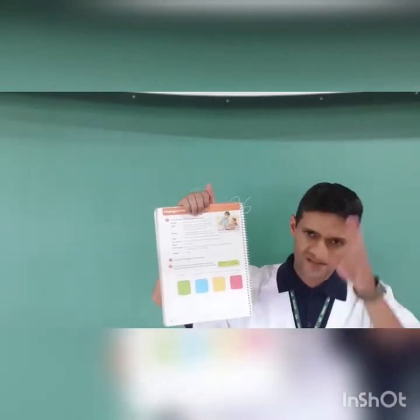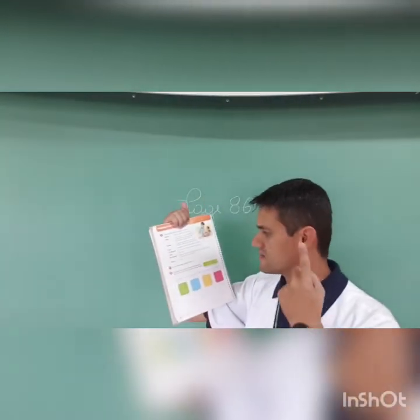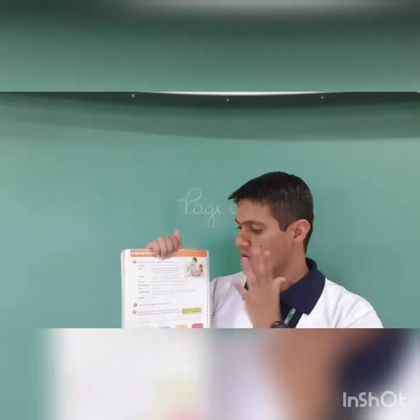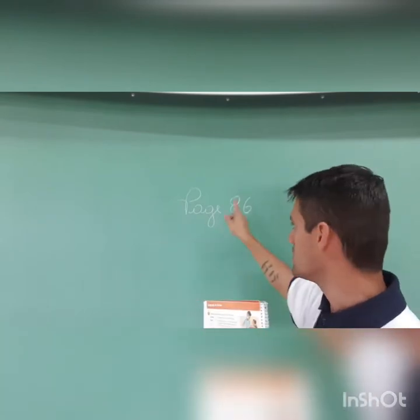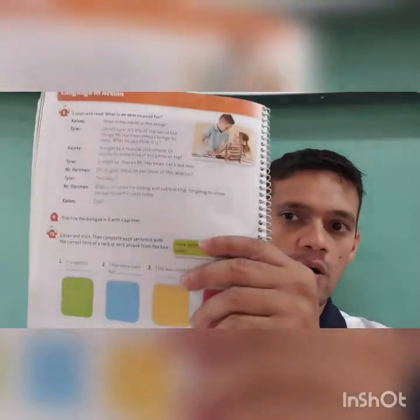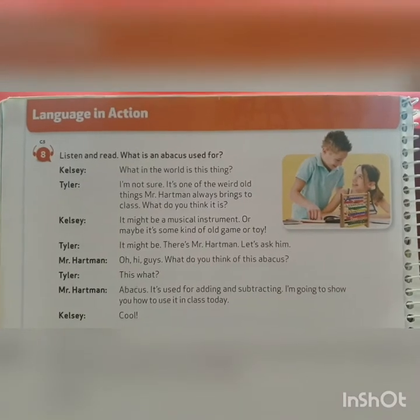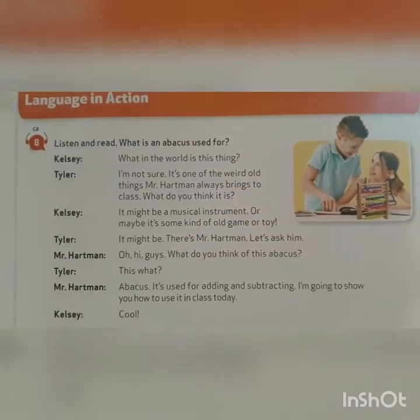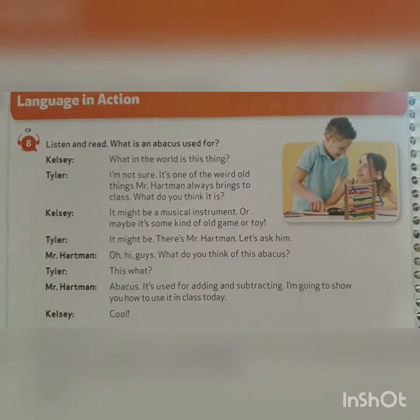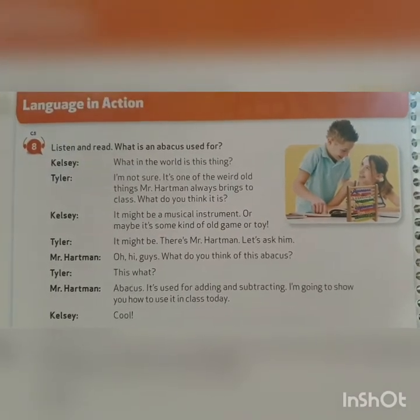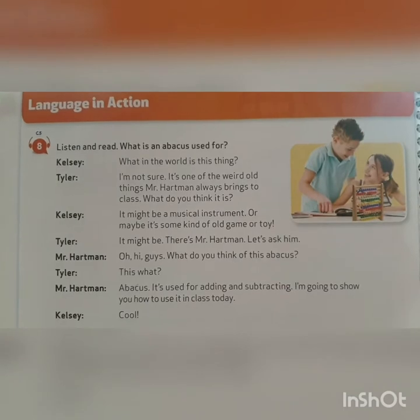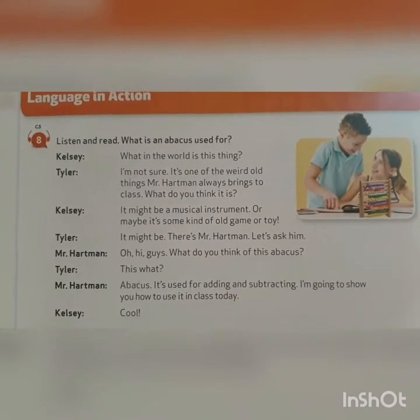Mr. Hartman just appears and has one or two sentences. We are going to understand what it talks about. Open your book to page 86. The teacher is going to play the CD and you just listen and look at your book. Page 86, Activity 8 — listen and read.